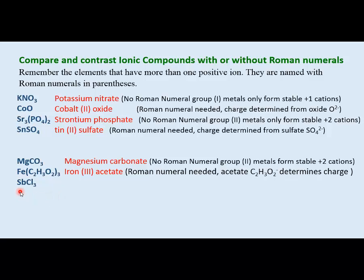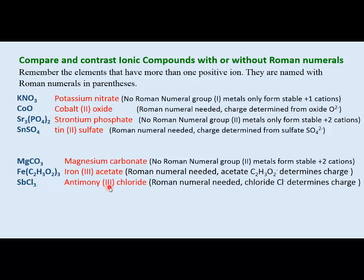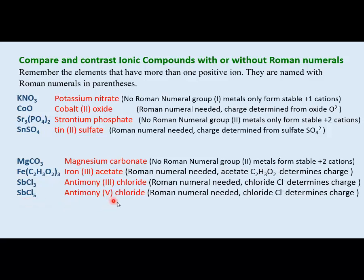For antimony chloride: the symbol for antimony is Sb. Antimony can have various charge states, so Roman numerals are needed. Chloride is a halogen anion with -1 charge. With three chlorides, SbCl₃, the antimony must be +3 — antimony(III) chloride. With five chlorides, SbCl₅, the antimony is +5 — antimony(V) chloride. Roman numerals are essential here to specify which formula is intended.